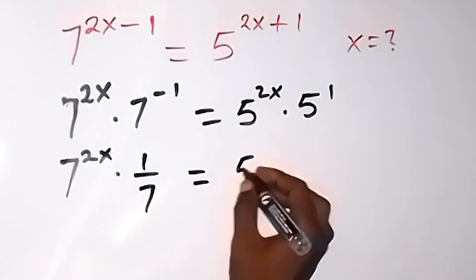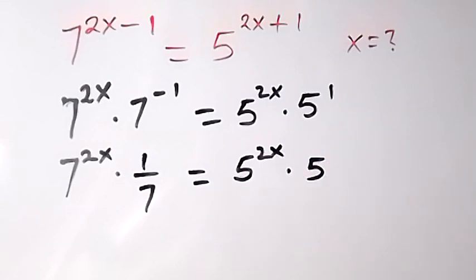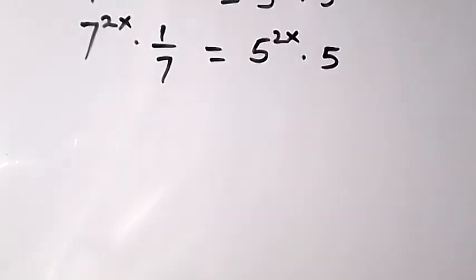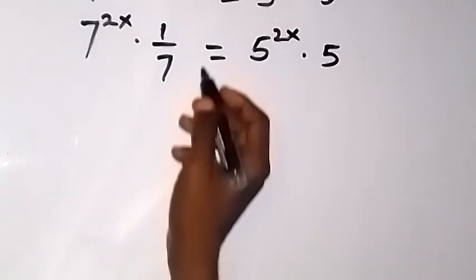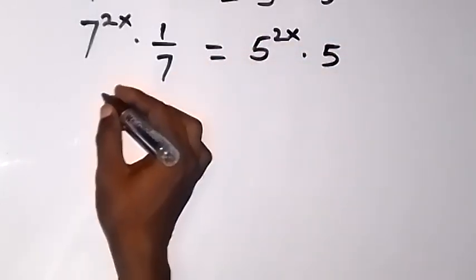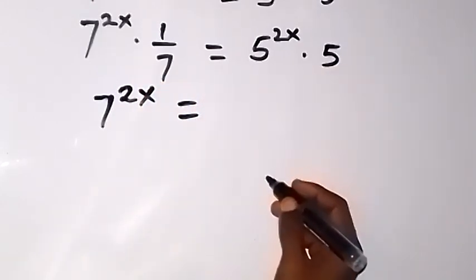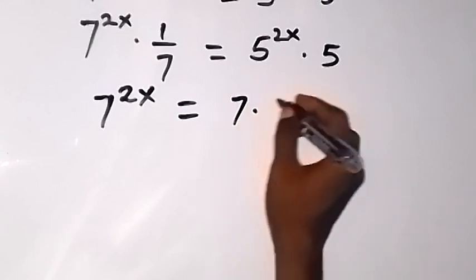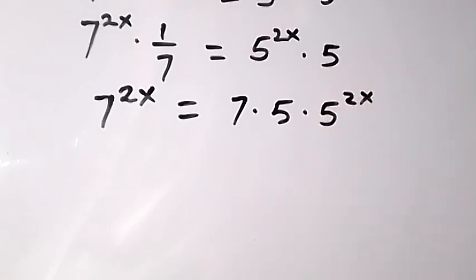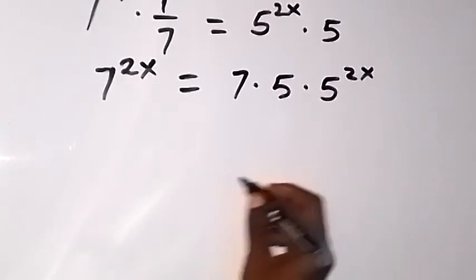Then equals to 5 raised to power 2x times 5 raised to power 1, that's the 5. To cancel this 1 over 7, we can multiply both sides by 7. When we multiply this side by 7, the 7 will cancel, and we remain with just 7 raised to power 2x. On the other side, multiplying by 7 gives us 7 times 5 times 5 raised to power 2x.